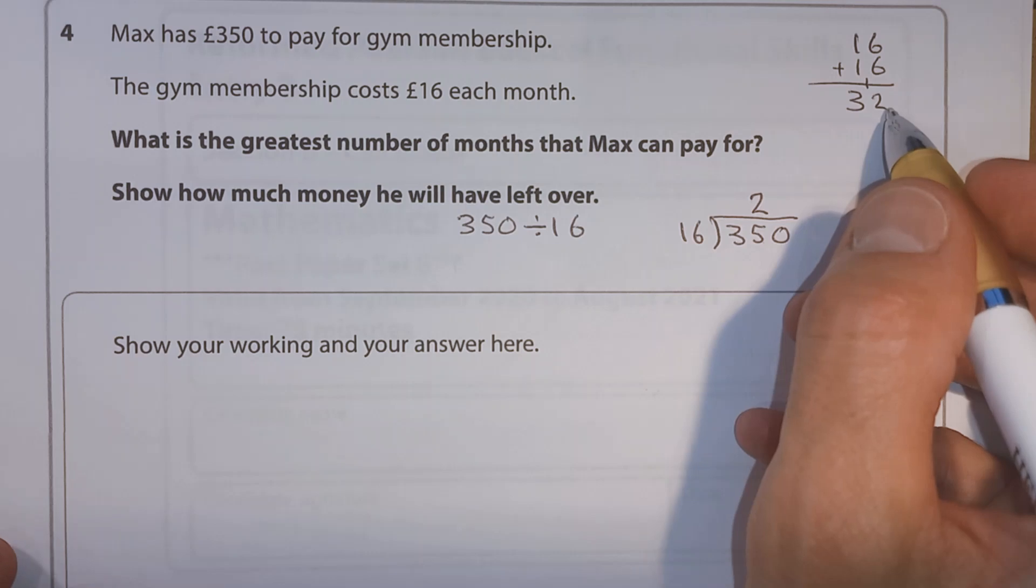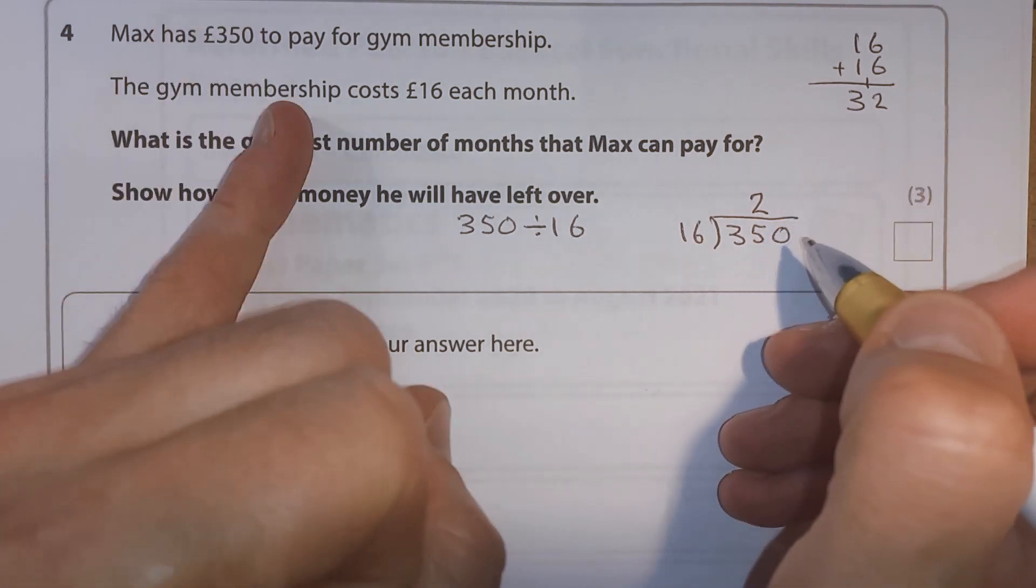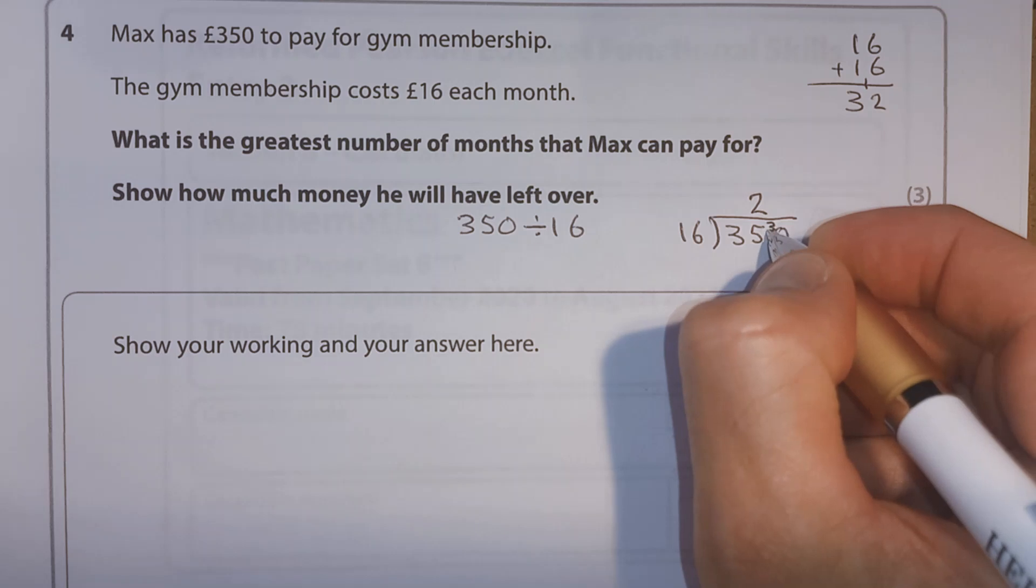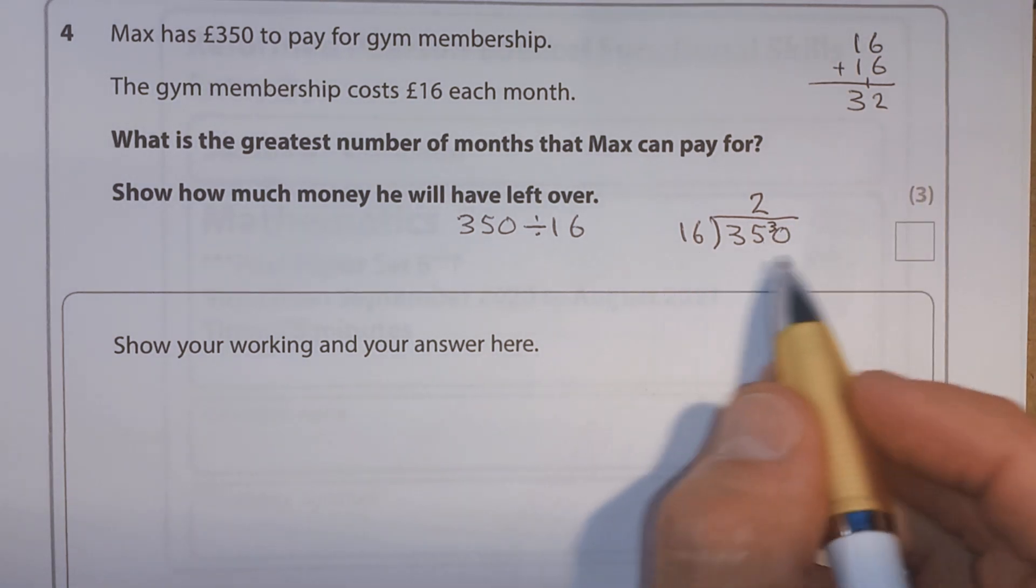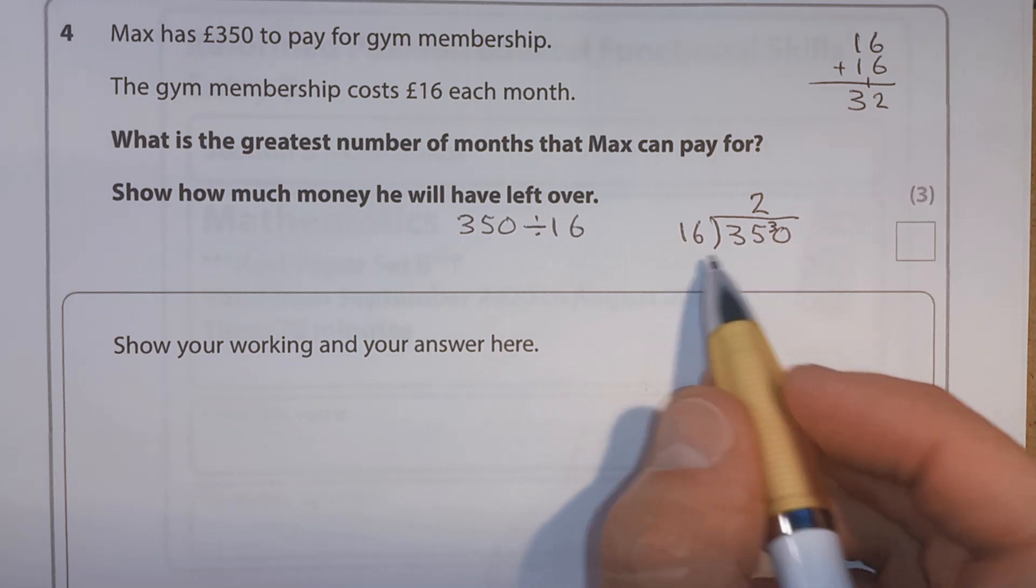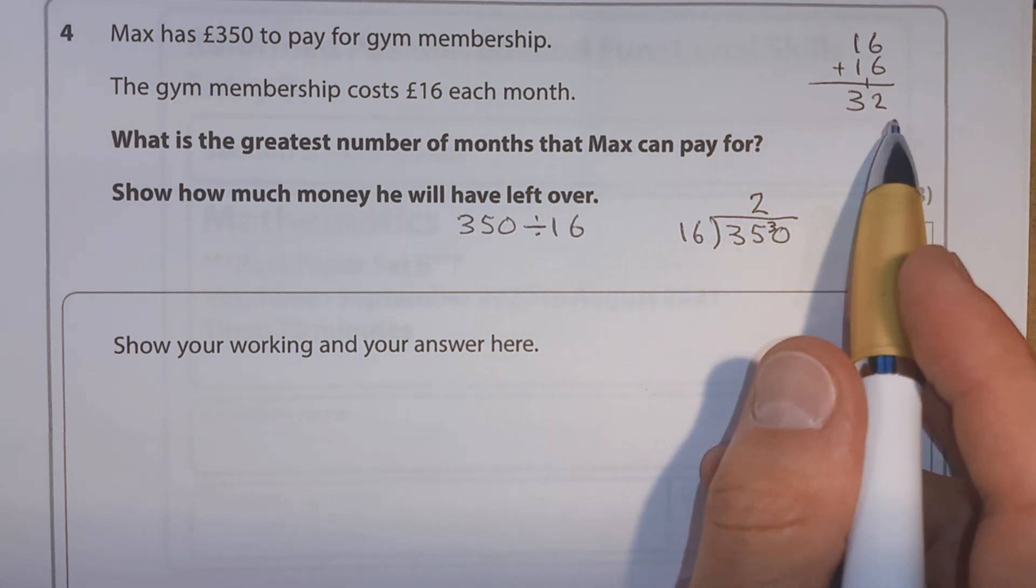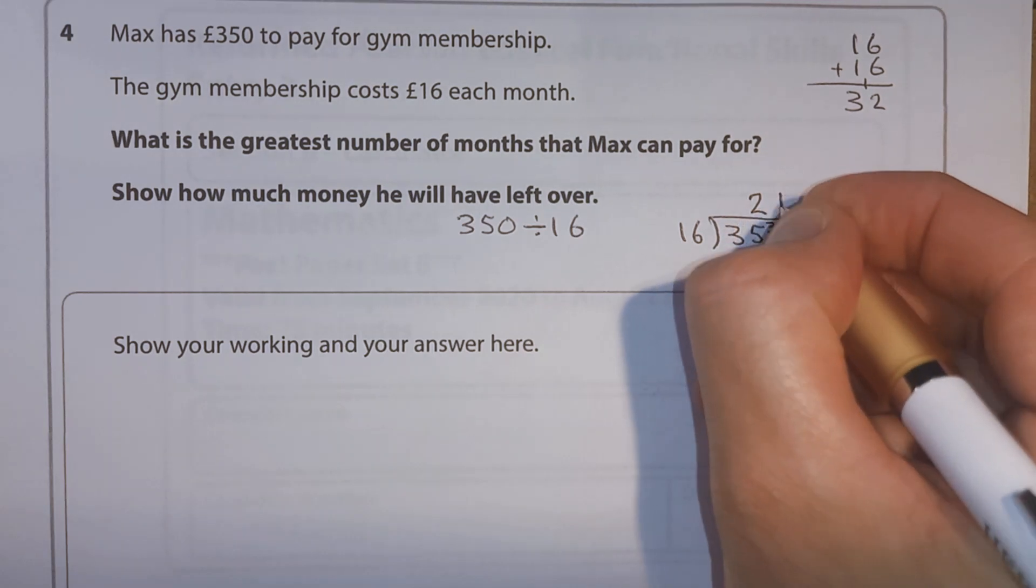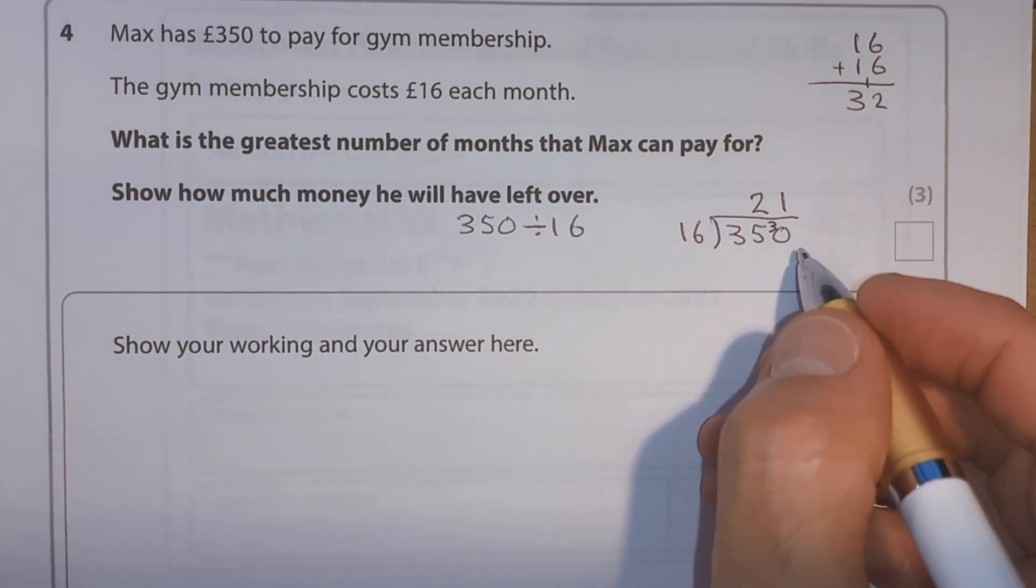Well, from 32 to 35, we've got 33, 34, 35. So 3 carried over. So what about 16 going into 30? Well, yes, it does. How many times? Well, we know that two 16s are 32. So it can't go in twice. So it must only go in once.